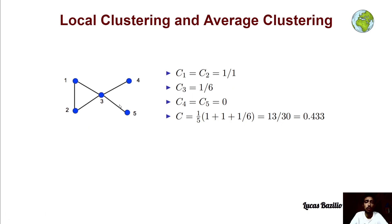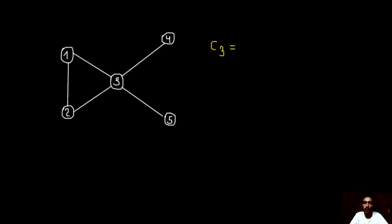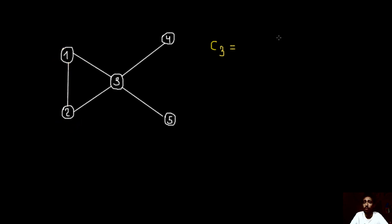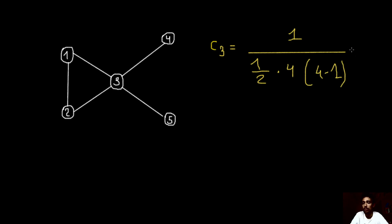Now let's go to node 3, which is a more interesting case. Node 3 has 4 neighbor nodes: 1, 2, 3, and 4. There is only one connection between them — only nodes 1 and 2 are connected. So the numerator is 1. On the denominator, we have one half of 4 multiplied by 4 minus 1, which is one half times 4 times 3, giving us 6. So the local clustering of node 3 is 1/6.